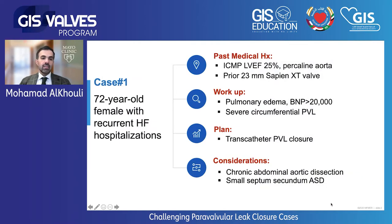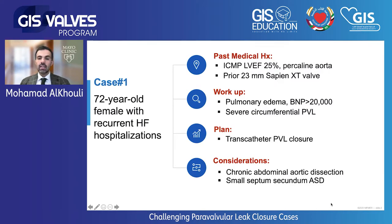This first case is a 72-year-old female who came with recurrent heart failure hospitalizations. She has ischemic cardiomyopathy, low EF, and a porcelain aorta. She underwent a 23-millimeter Sapien XT valve implantation at another institution via transapical access. At the time of presentation, she was found to have pulmonary edema, a BNP over 20,000, and severe circumferential paravalvular leak.